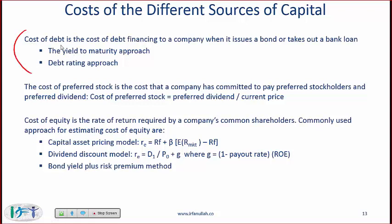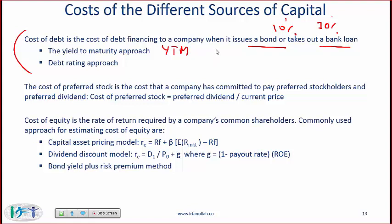The cost of debt is the cost of debt financing to a company when it issues a bond or takes out a bank loan. If a company takes out a bank loan and the cost of borrowing is 10% and the tax rate is 30%, then the after-tax cost of borrowing is 10% × (1 − 0.3) = 7%. If a company issues a bond, you calculate the cost of borrowing by computing the yield to maturity. For example, if a company issues a bond with par value of 1,000, a five-year bond, and proceeds raised equal 900.